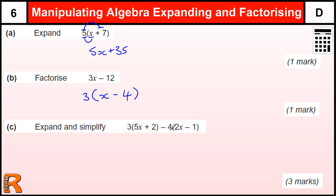Expand and simplify. So we're doing this multiplying out of the bracket twice, so we've got 3 lots of 5x, so 3 lots of 5x is 15x. 3 lots of plus 2 is plus 6. Now this is where it gets tricky. We've got minus 4.